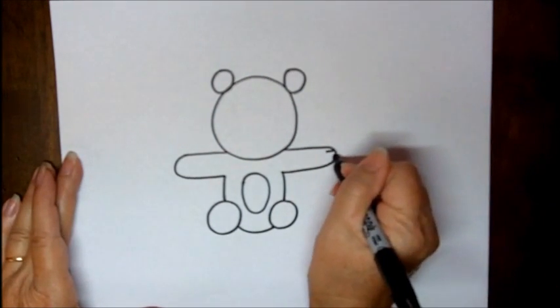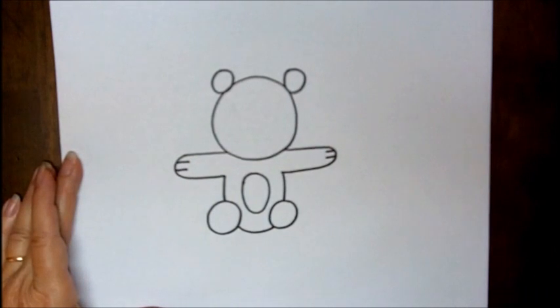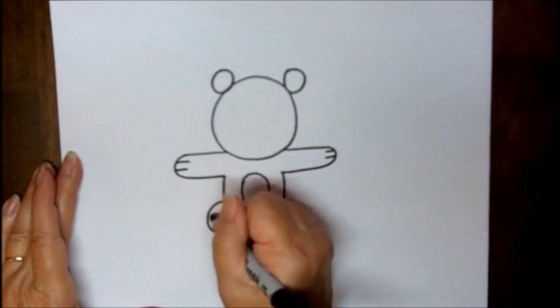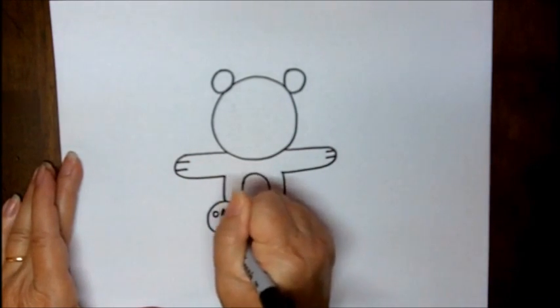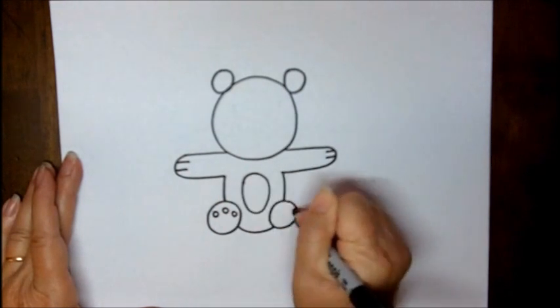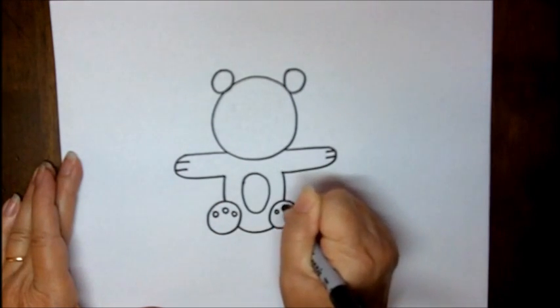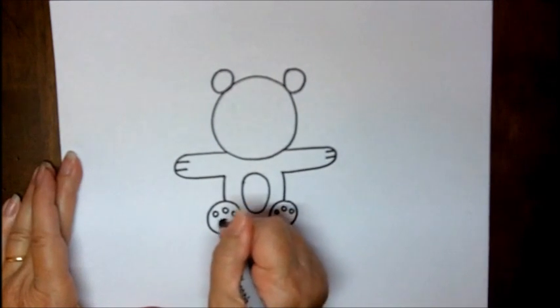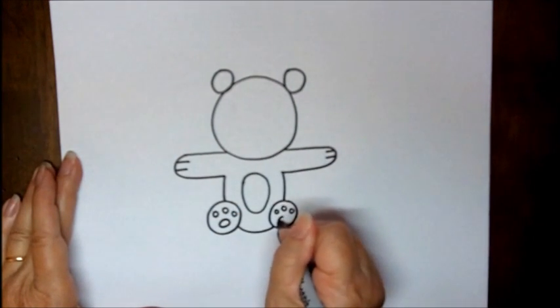Add some little lines for claws, and then here on the feet, some tiny little dots for his toes, and then some bigger underneath.